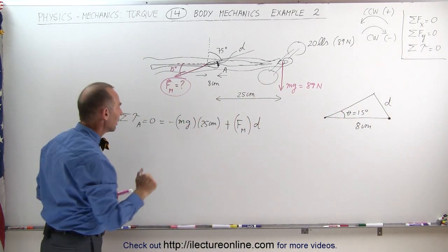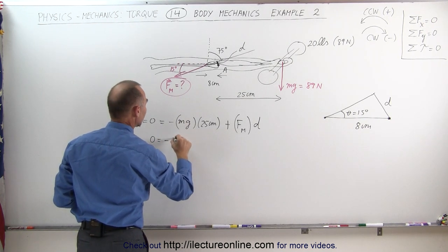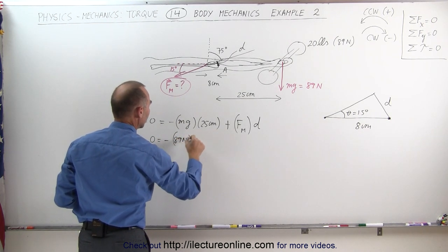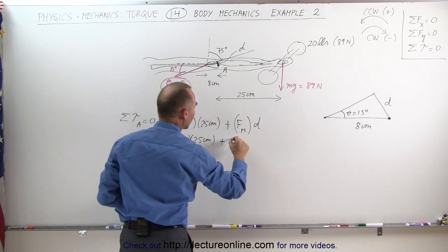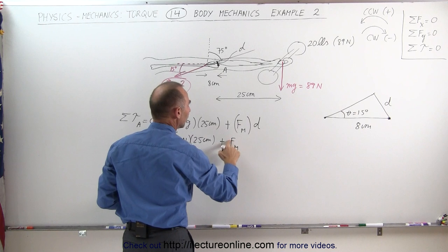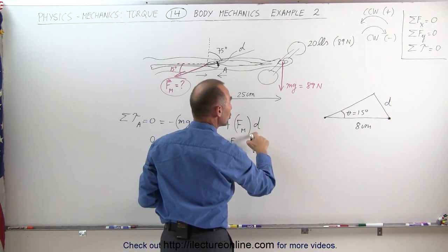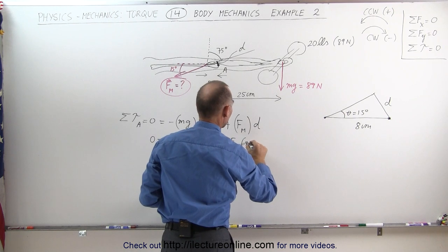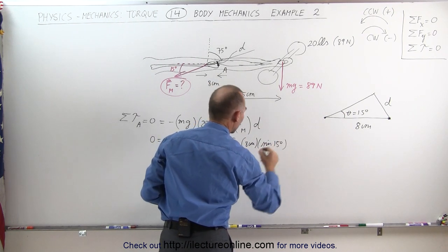When we plug that into our equation, we get: 0 equals minus mg, which is 89 newtons, times 25 centimeters, plus the force exerted by the muscle to hold up the 20 pound barbell times D, which equals 8 centimeters times the sine of 15 degrees.